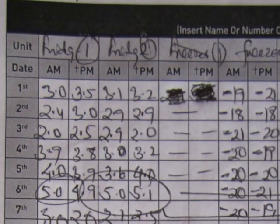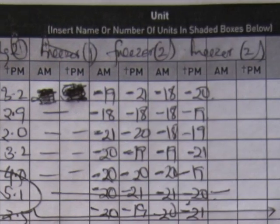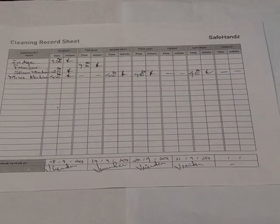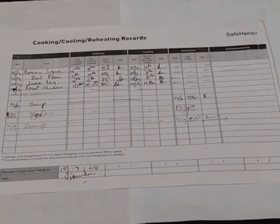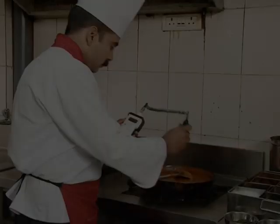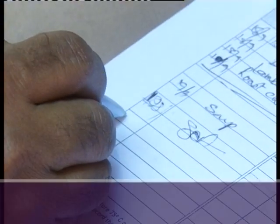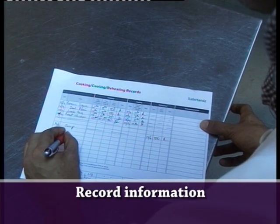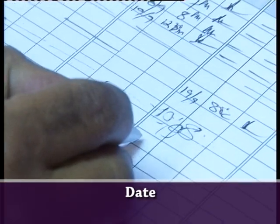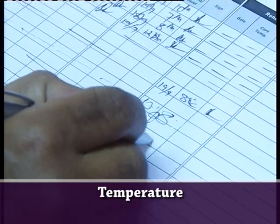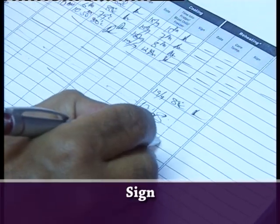When you record the temperature using the correct procedure, it becomes written evidence of steps taken to ensure food safety. Complete recording sheets relevant to your area, recording information including date, temperature, and signature.